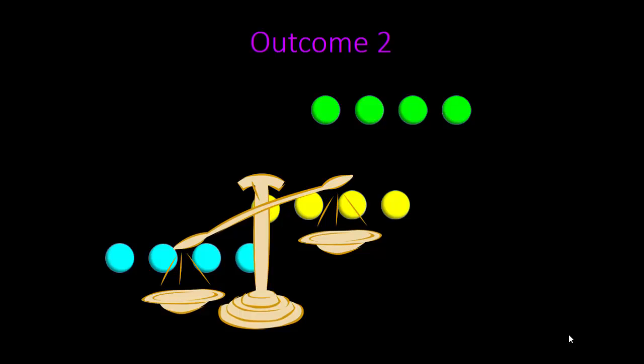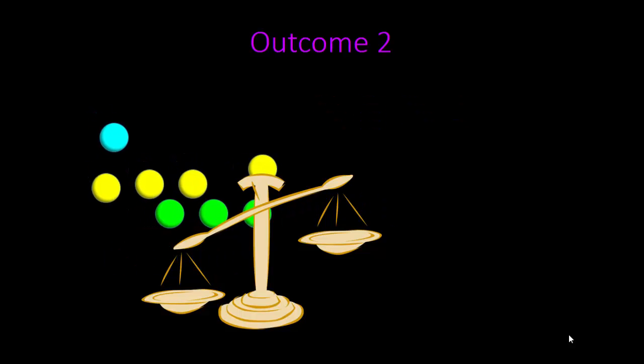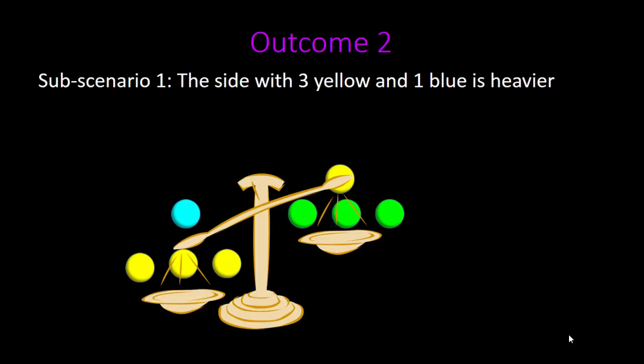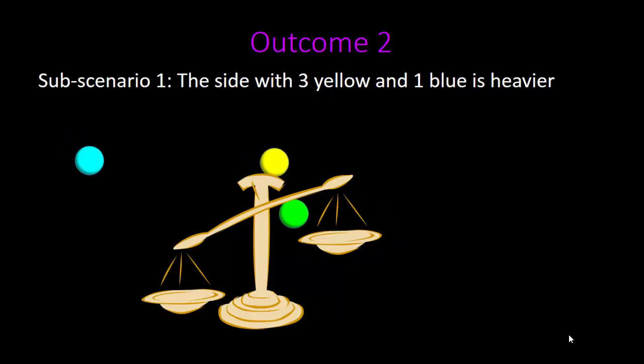In the method I'm showing you, we weigh three yellow and one blue marble against three green and one yellow. In sub-scenario one, the side with the three yellow and one blue marble is heavier. This means the oddball is either the blue marble on the left side or the yellow on the right.